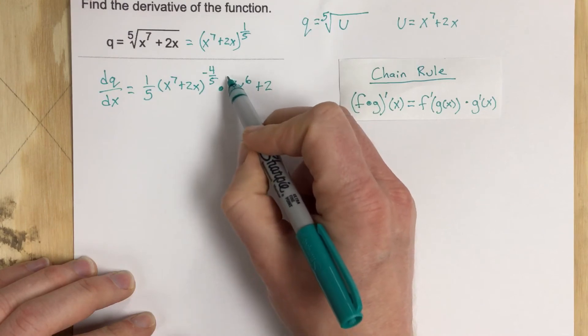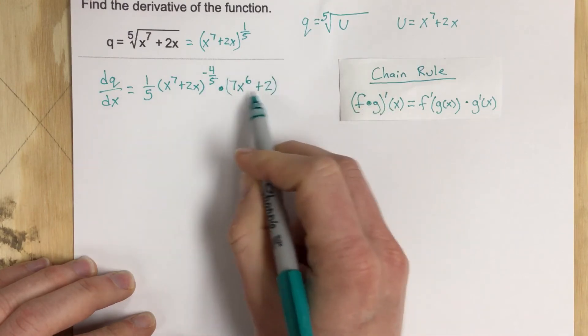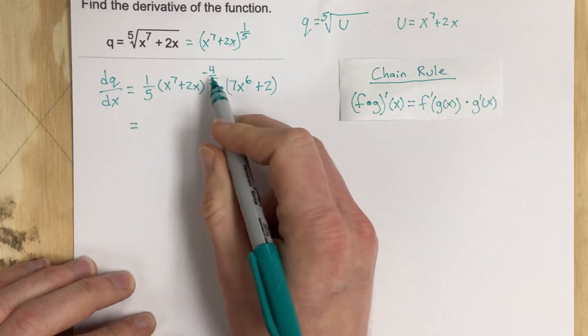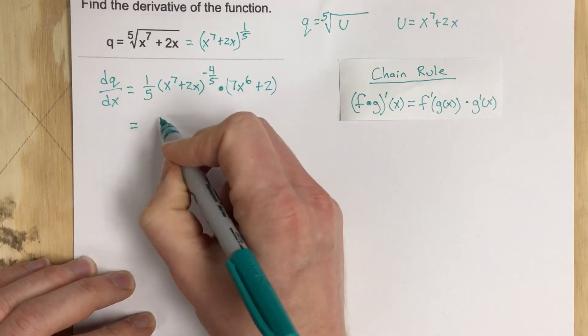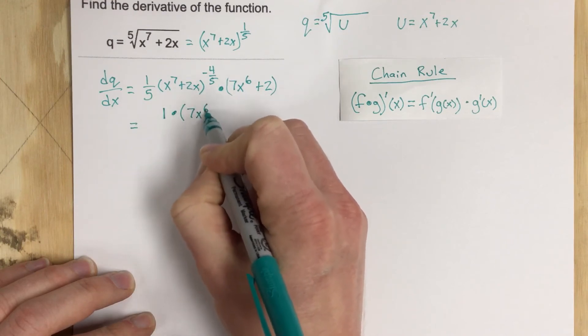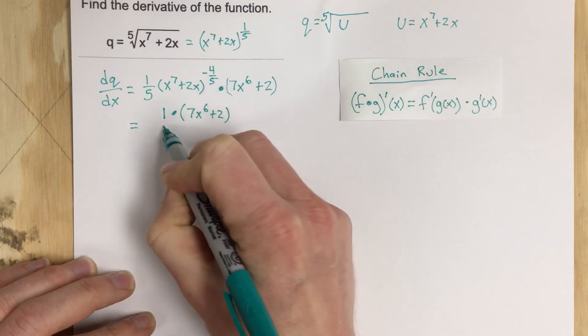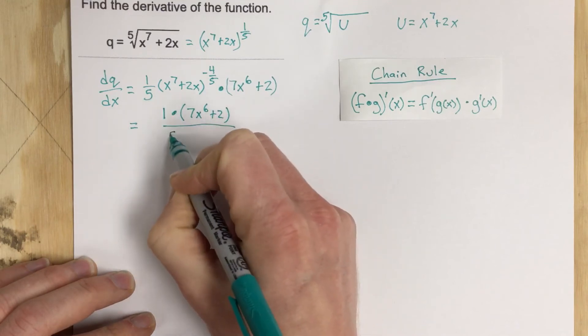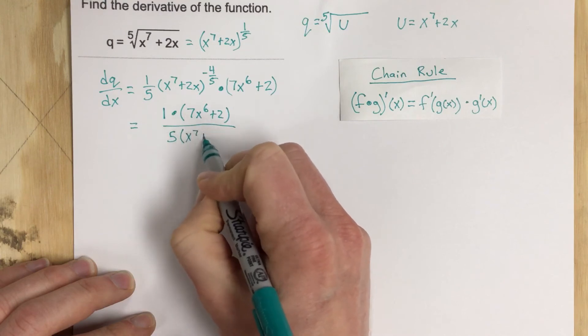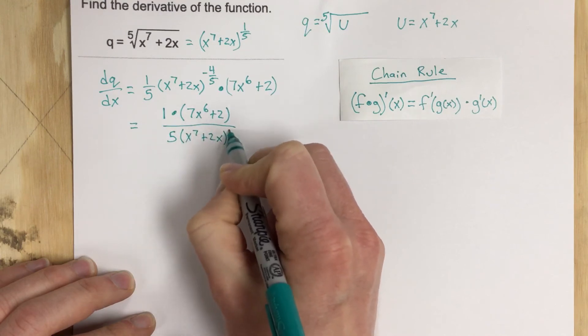So we have two things being multiplied times this, if we rearrange all that, let's move this to the bottom. Essentially on top we'll have 1 times 7X to the sixth plus 2, that's going to be the stuff on top, over 5 in the denominator and then this is in the denominator which is X to the seventh plus 2X to the four-fifths.